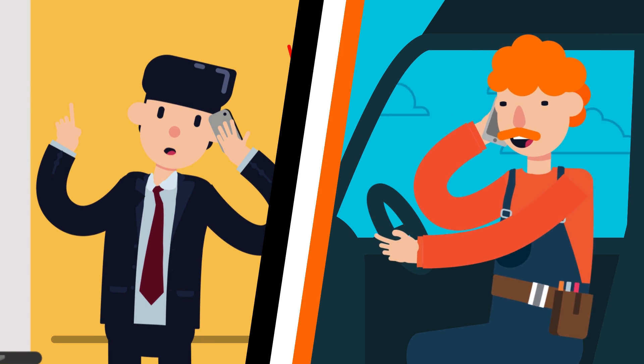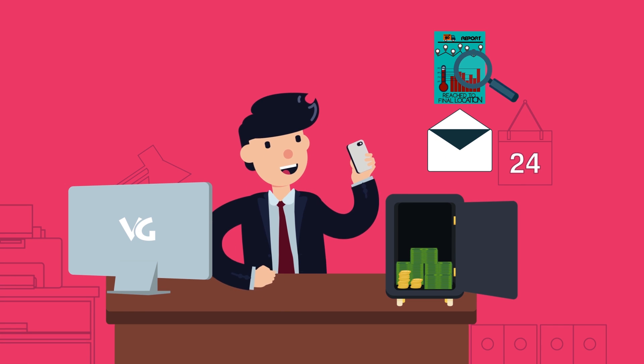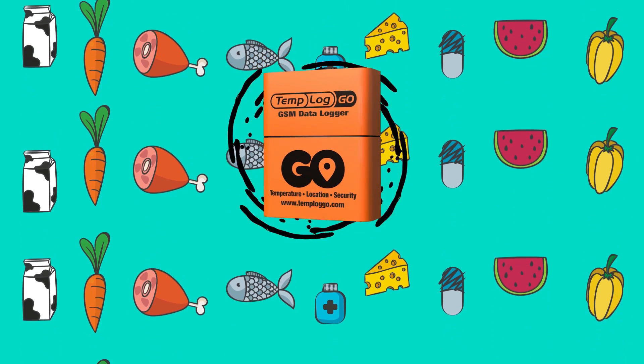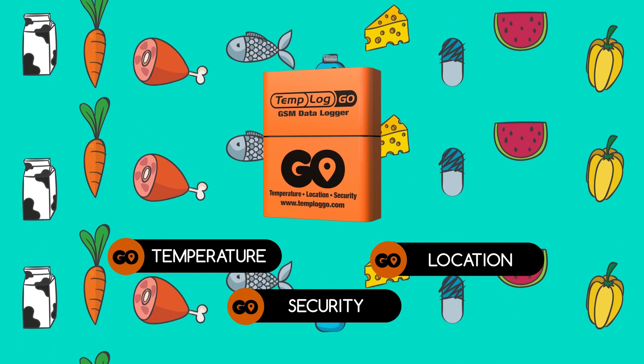Automatic reports are forwarded to you when vehicles reach their target locations. Templot Go is the only and perfect solution for cold chain shipments where temperature, location, and security are extremely important.